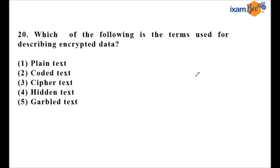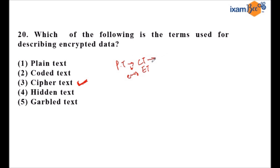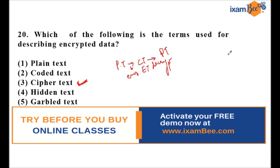Question twenty, the last question of the NABARD 2017 computer section, asks: which of the following is the term used for describing encrypted data? The answer is cipher text. Plain text has an algorithm applied to it and changes into cipher text — this process is called encryption. The reverse process, applying an algorithm to cipher text to obtain plain text, is called decryption.